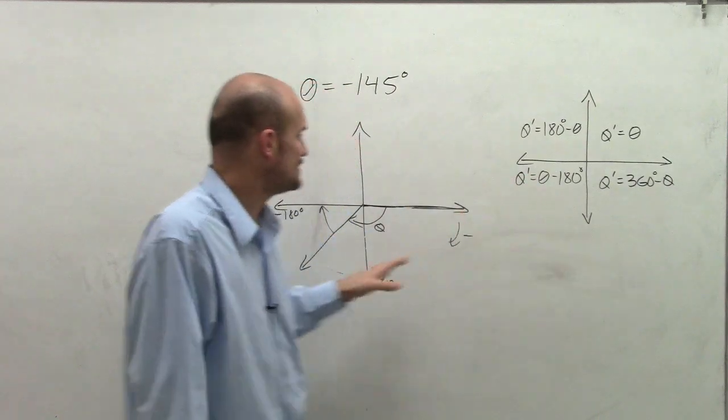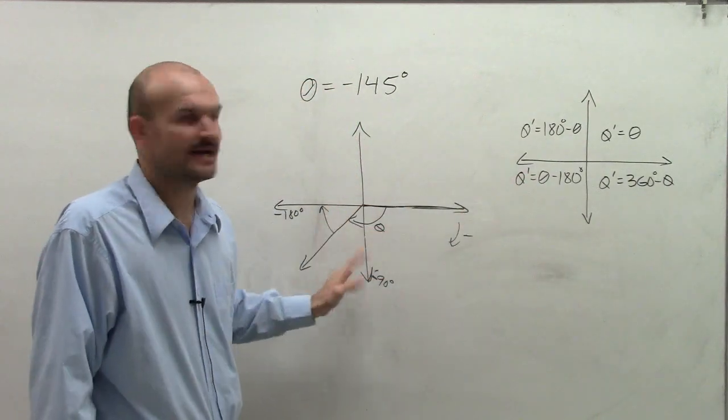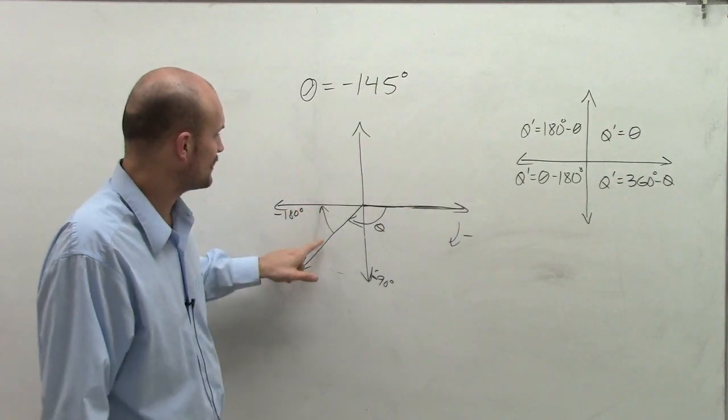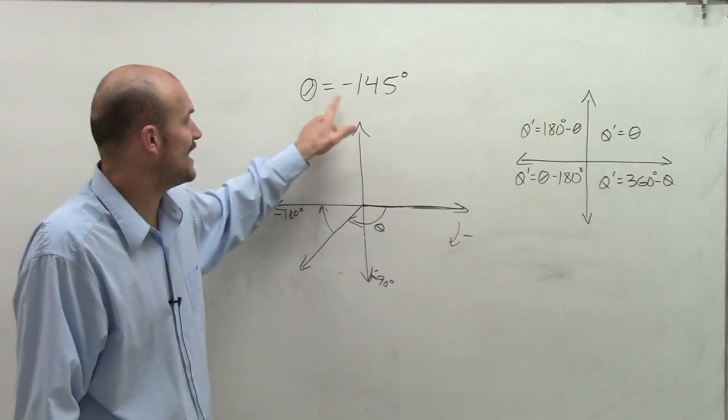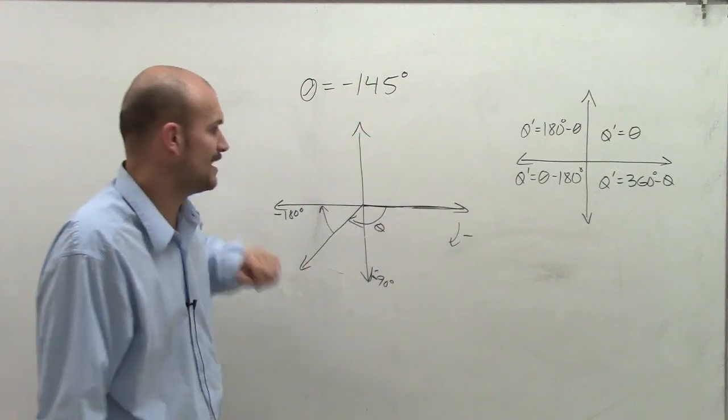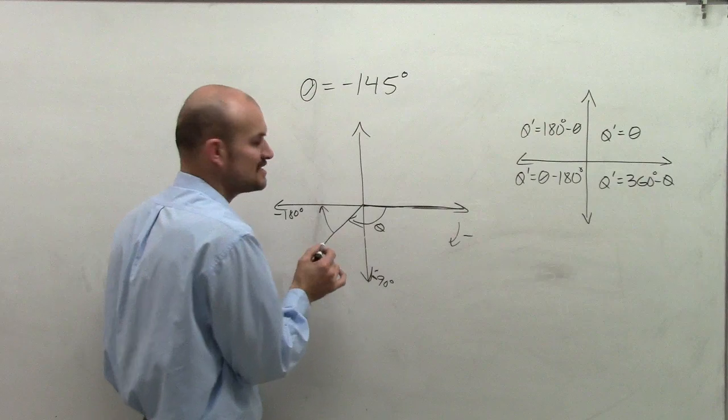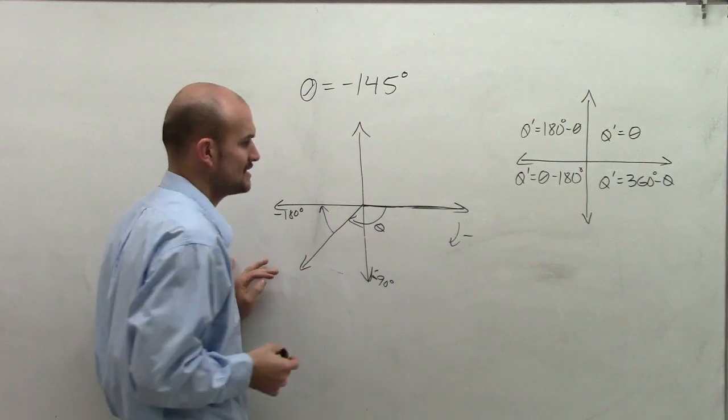So what I need to do is determine what is the coterminal angle. What is a positive angle that's going to have the same terminal side as my angle theta equals negative 145? Then I can use the formula for the third quadrant since the terminal side of my angle lies in the third quadrant.